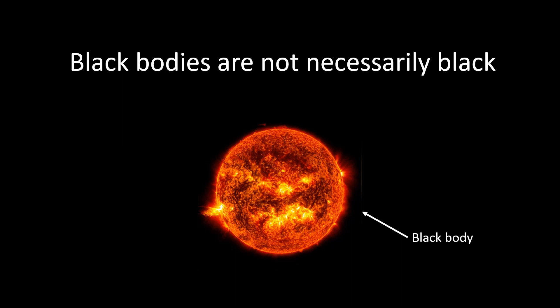So despite its name, black bodies aren't necessarily black. They can have a specific color. For example, the sun can be considered a black body. To simplify understanding, think of a black body as an object that soaks up all incoming radiation, like light, without reflecting or transmitting any of it. It absorbs everything.